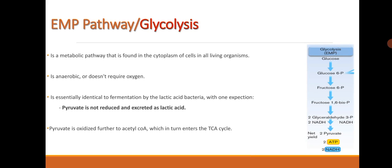EMP pathway, also known as glycolysis, is a metabolic pathway that is found in the cytoplasm of cells in all living organisms. It is anaerobic and doesn't require oxygen. It is essentially identical to fermentation by lactic acid bacteria with one exception: pyruvate is not reduced and excreted as lactic acid.